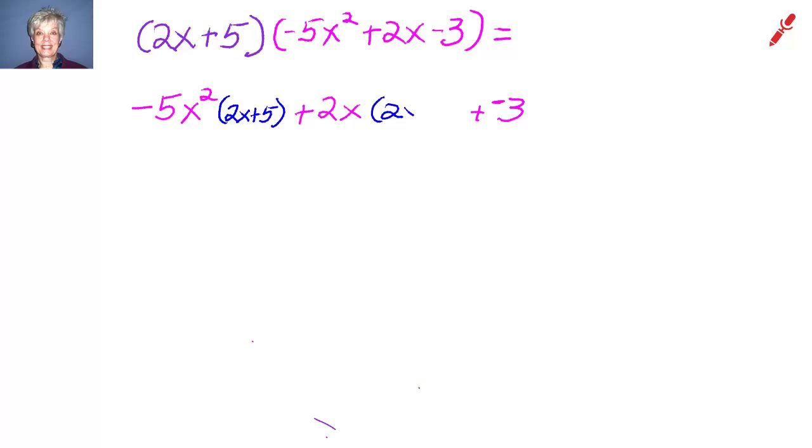So I'll have -5x² times (2x+5) plus 2x times (2x+5) plus -3 times (2x+5).